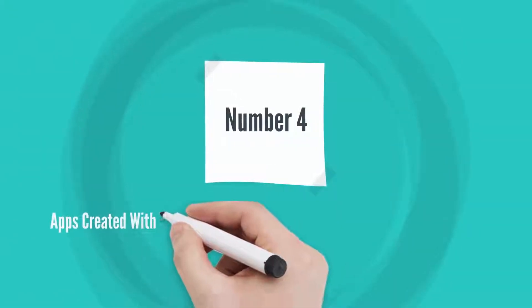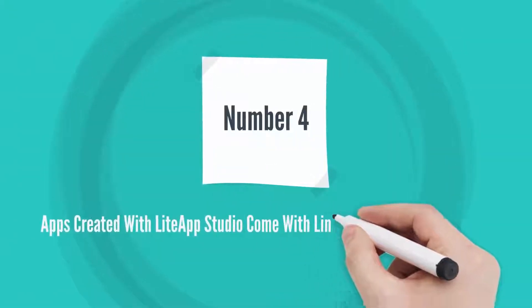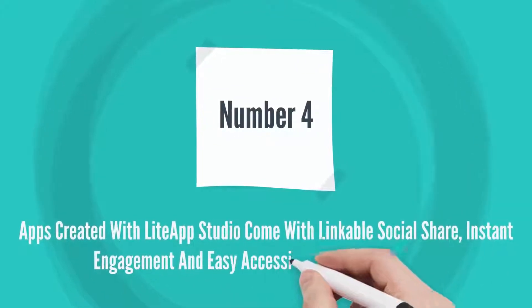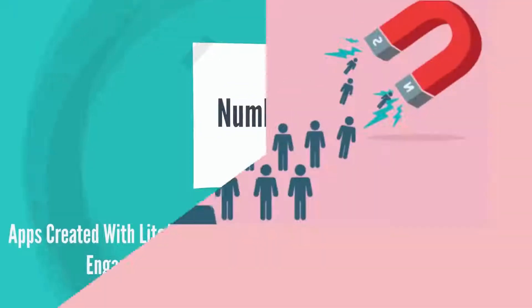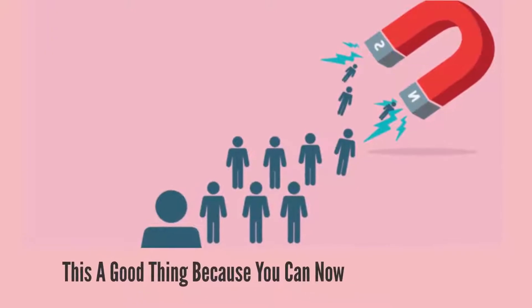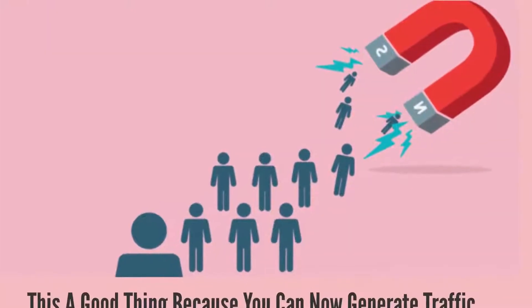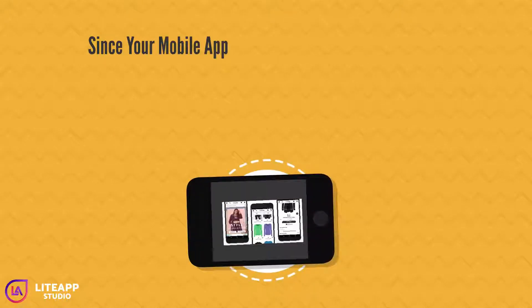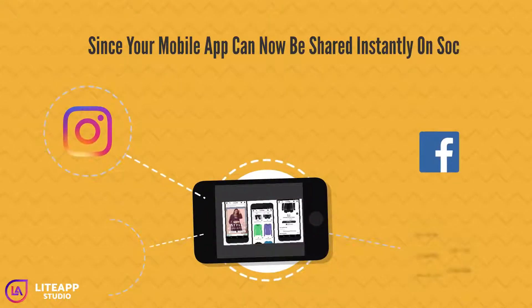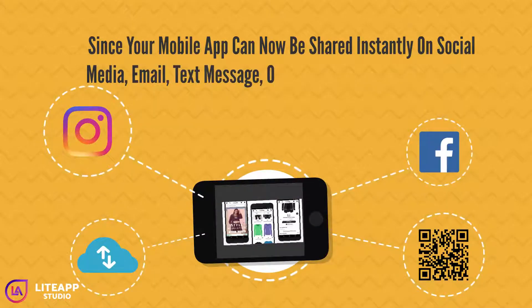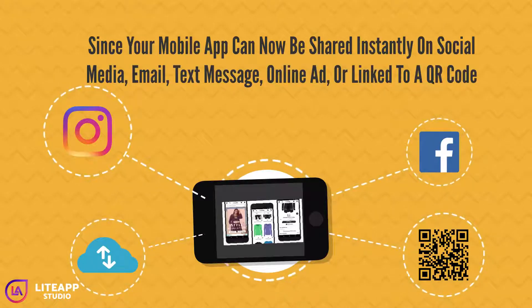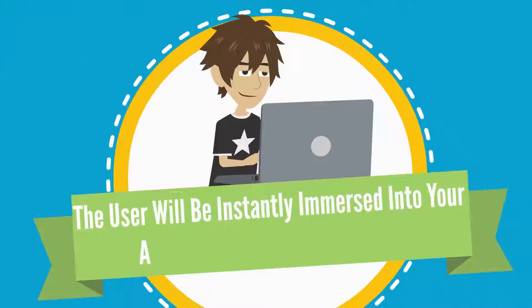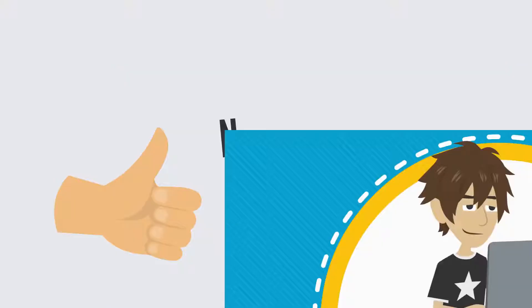Number four: apps created with Light App Studio come with linkable social share, instant engagement, and easy accessibility from any device. This is a good thing because you can now generate traffic and sales effortlessly, since your mobile app can now be shared instantly on social media, email, text message, online ads, or linked to a QR code. The user will be instantly immersed into your app as soon as they receive it.